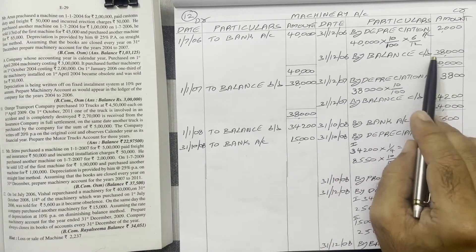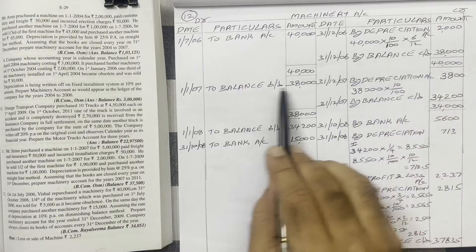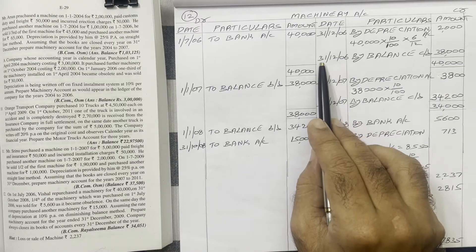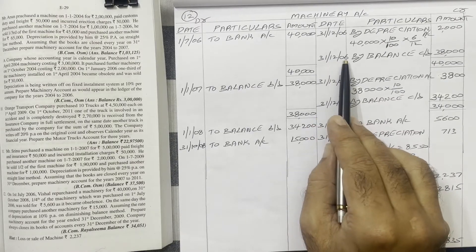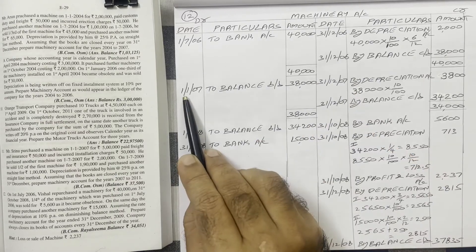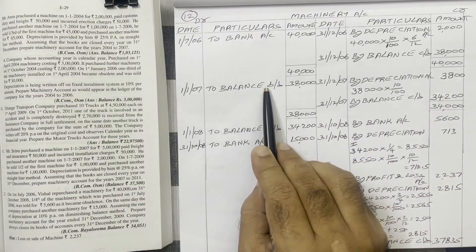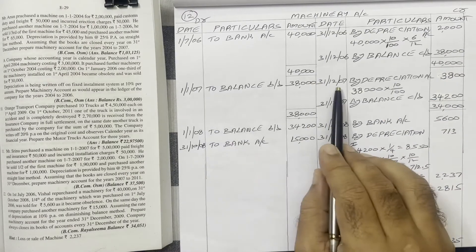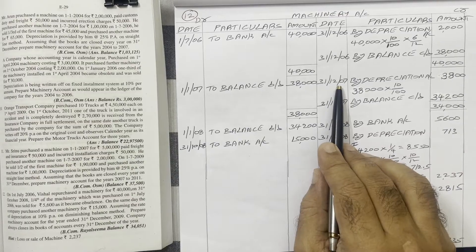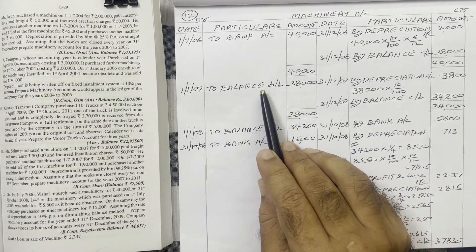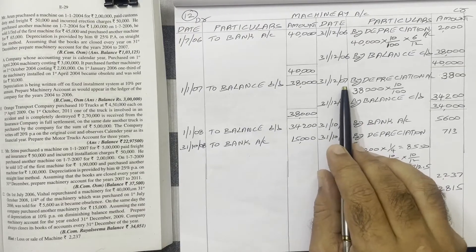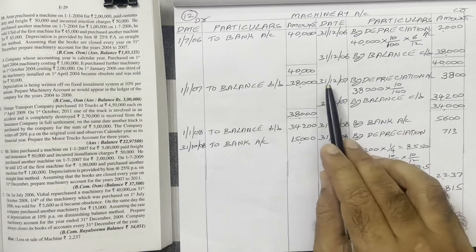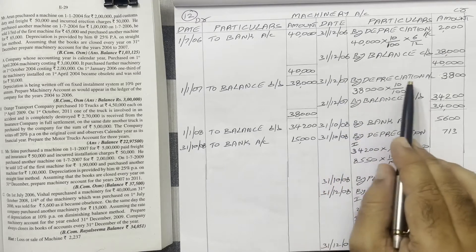Come to 2007. The balance carried down becomes balance brought down on the debit side. The date is 1st January 2007 and the amount is 38,000 rupees. In 2007 there is no additional purchase and no sale, so only one machine we have. At the end of 2007, on 31st December, we calculate depreciation on the credit side — 'By Depreciation'.